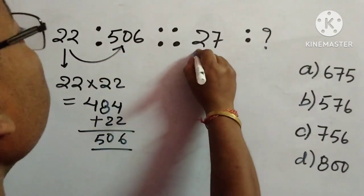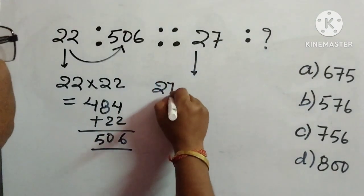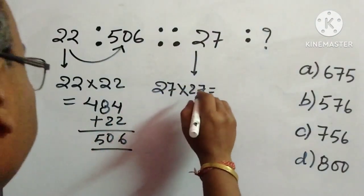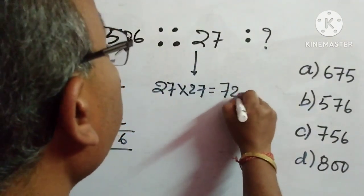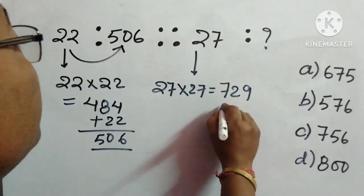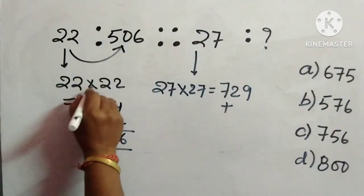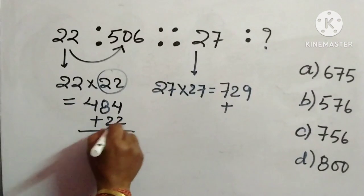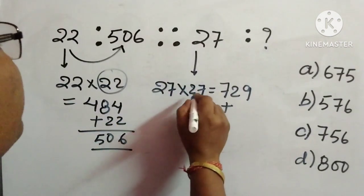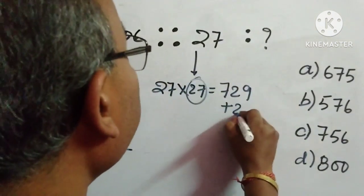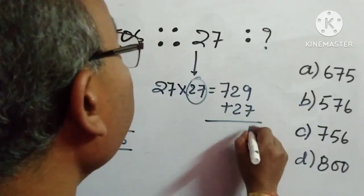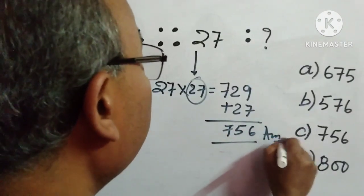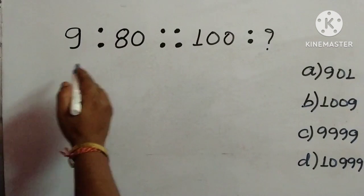So we implement the same process: multiply 27 by 27 — that is 27 squared — which gives 729. Then, just as we added 22 to 22 squared earlier, we add 27 to 729, giving us 756. So 756 is the answer — option C. This is a question of number analogy.